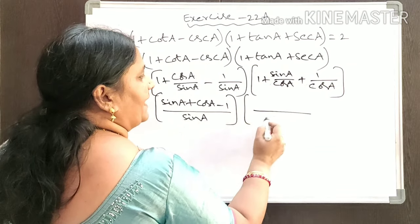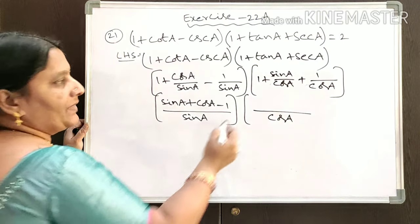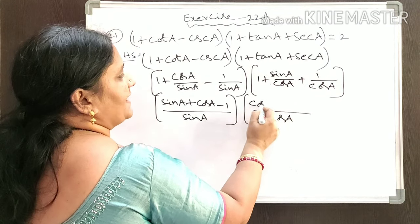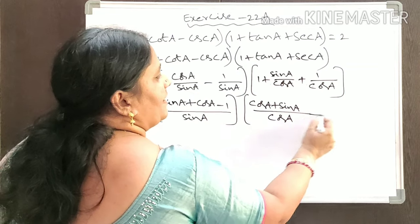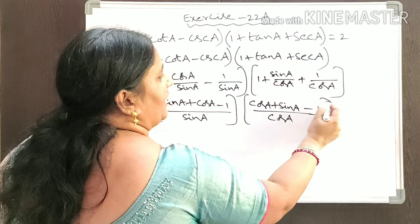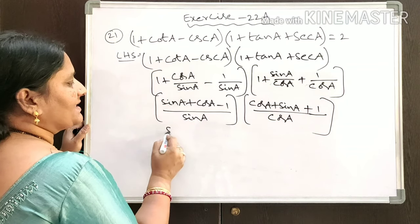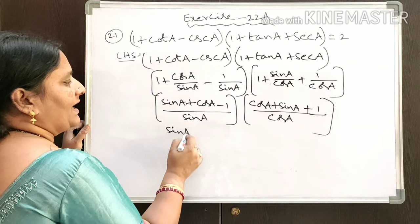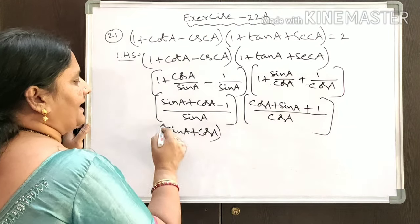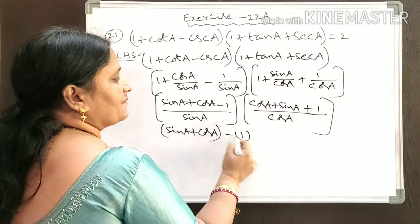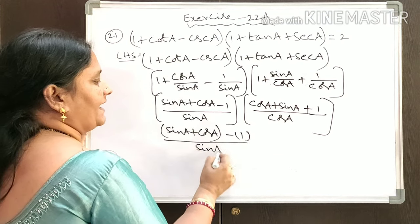In the second bracket, cosA is the LCM. The numerator becomes cosA + sinA + 1, with the denominator being sinA for the first bracket.